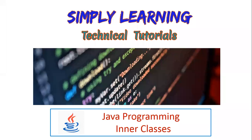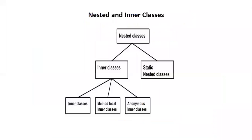Today we are going to discuss inner classes in Java. An inner class means one class which is a member of another class. In Java, just like methods and variables of a class, a class can also have another class as its member. The class written within is called the nested class and the class that holds it is called the outer class. The scope of a nested class is bounded by the scope of its enclosing class — if class B is defined within class A, then class B does not exist independently of class A.